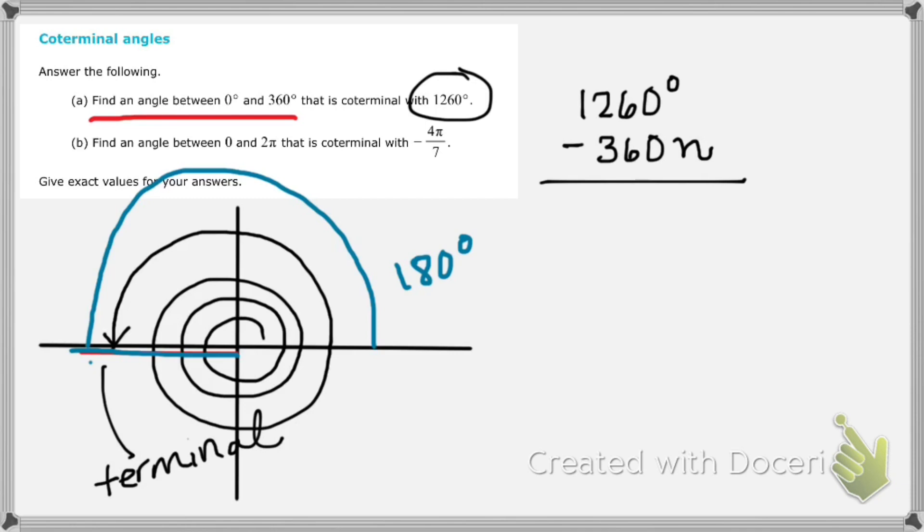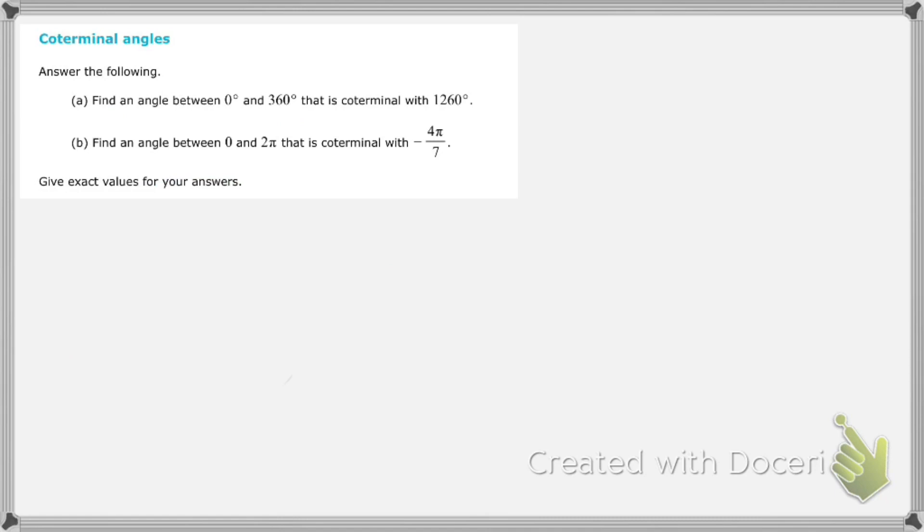Now let's go ahead and look at the same question but with radians, with an angle that is given in radians. In this case, we're going to look at this angle here, and it's negative. So this is an angle that is headed in a negative direction, which we should know is going to be in the clockwise direction. So rotating this way for negative 4π over 7.